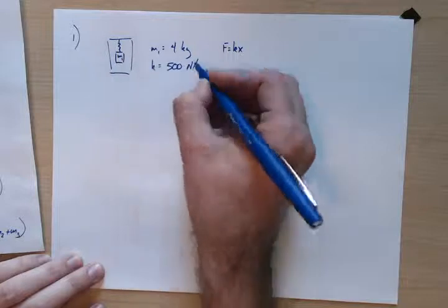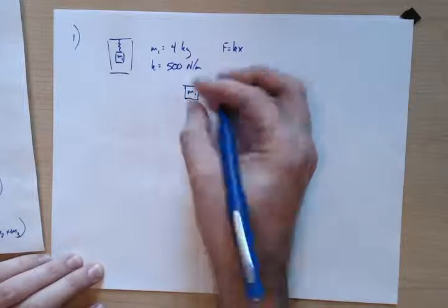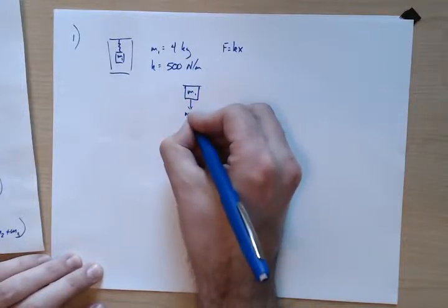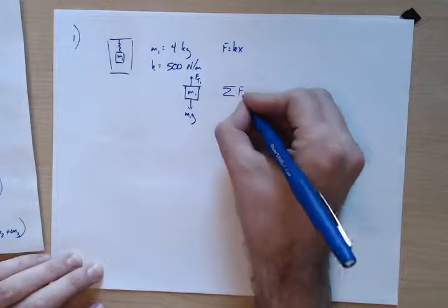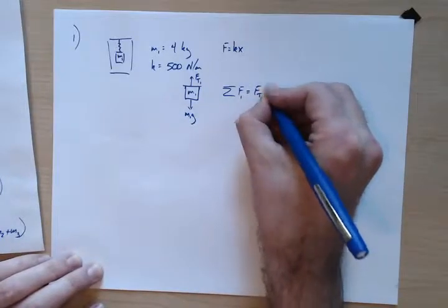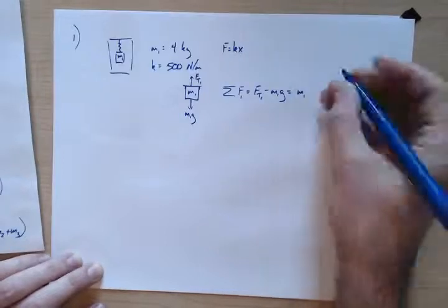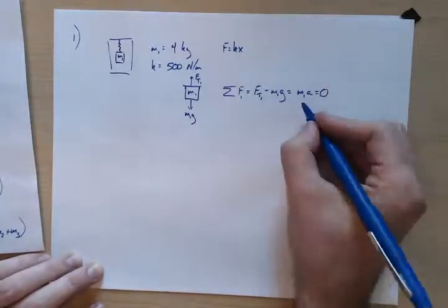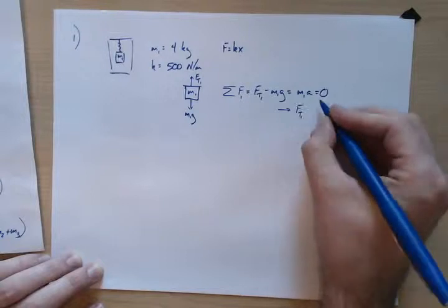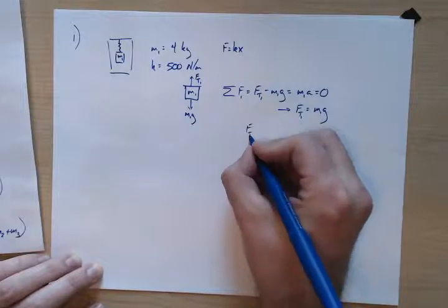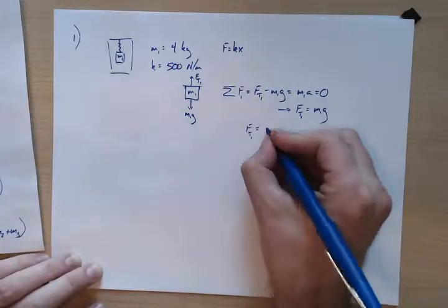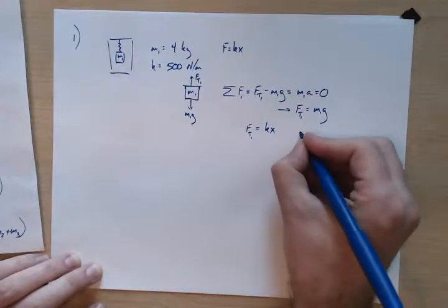Part one wants to know: you hang this mass on the spring, how much does that spring elongate? We can solve this with the free body diagram of the mass. It has two forces: the weight of the mass pointing down and the force of tension pointing up. The sum of forces on m1 is tension minus m1g equals m1 times acceleration, which is zero. So the force of tension equals m1g. Using Hooke's Law, we can solve for x.